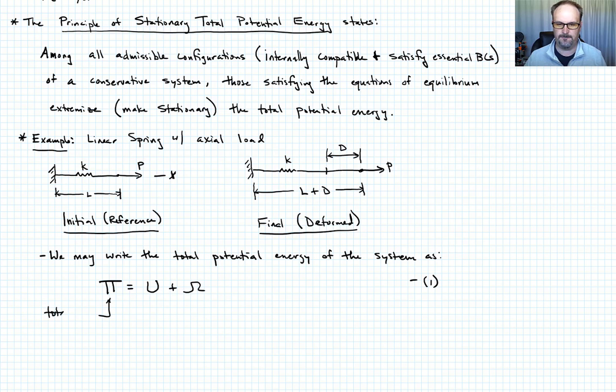Then I'm going to label these so you have them in your notes. This is the total potential energy. This U is the strain energy. And omega is the potential energy of the applied loads.